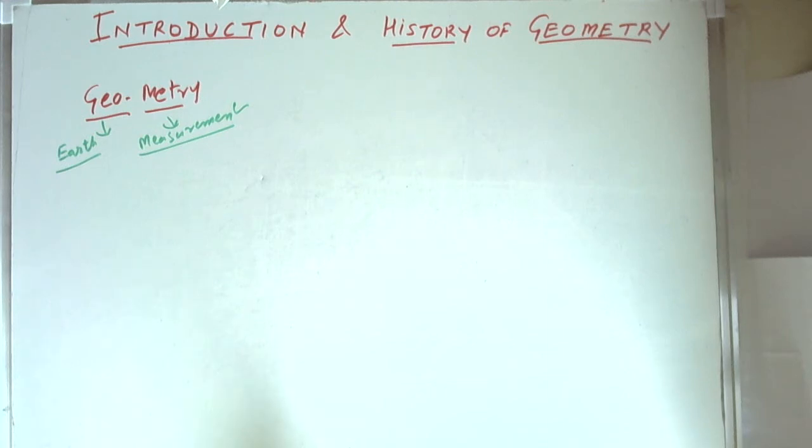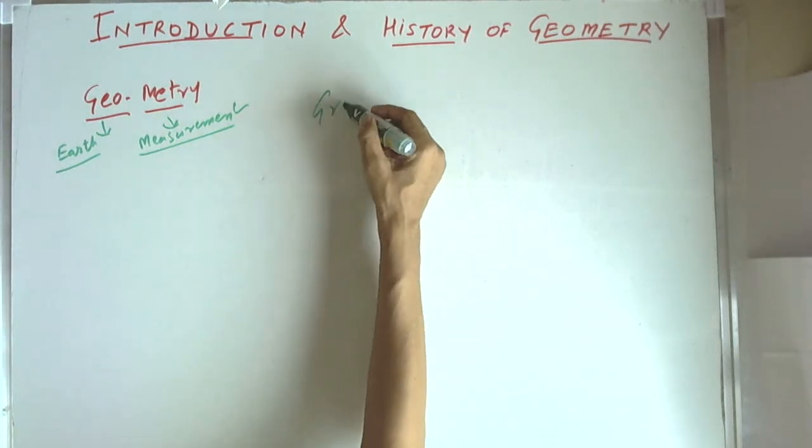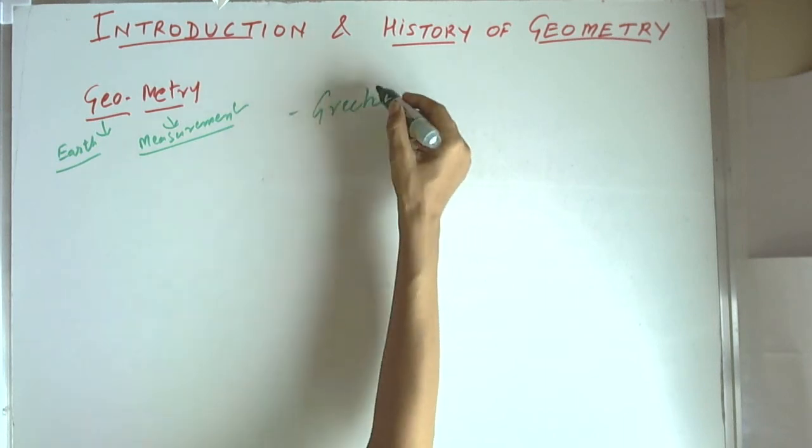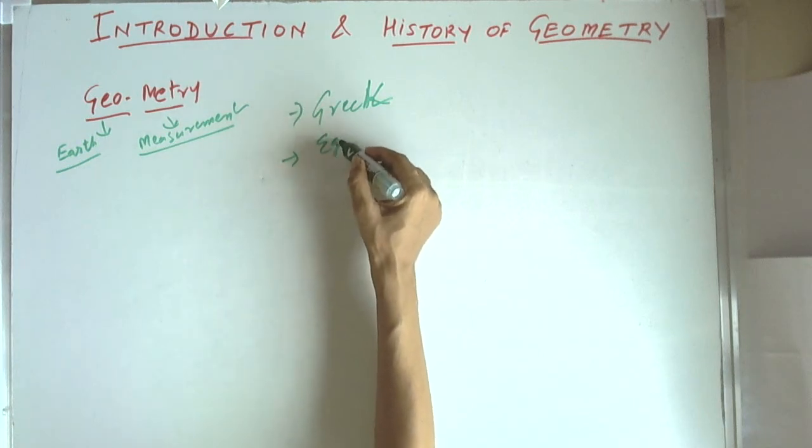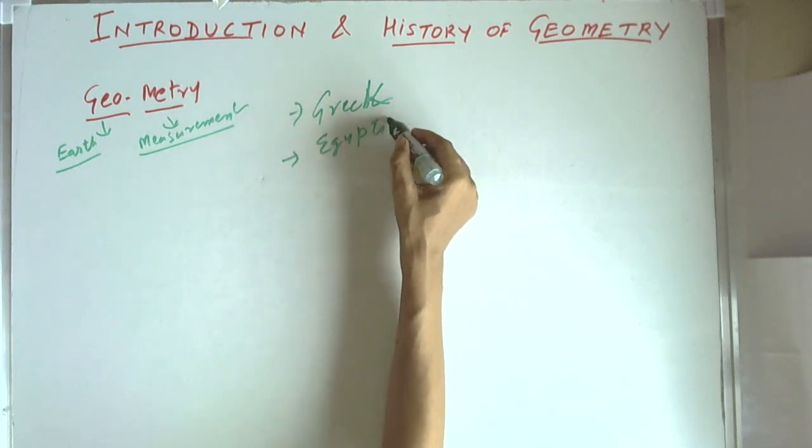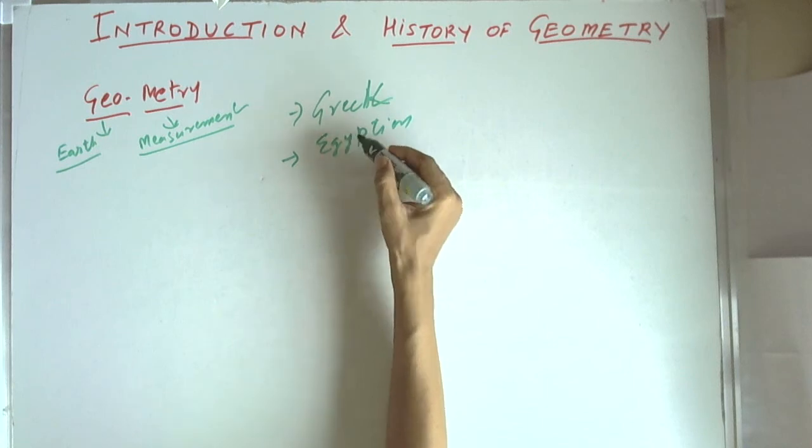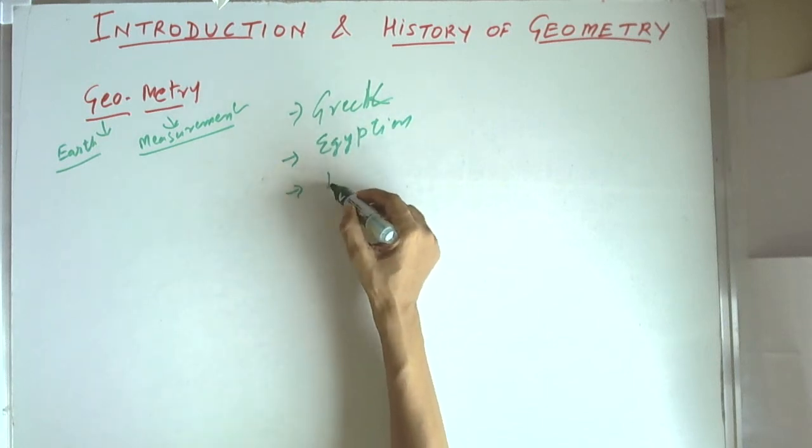If we look at the historical development of geometry, the geometry evolved in three main civilizations of the world: the Greek civilization, the Egyptians, and the Indians.